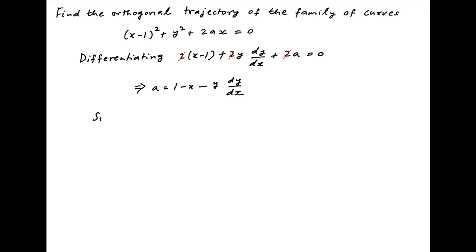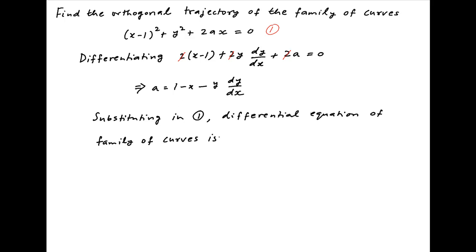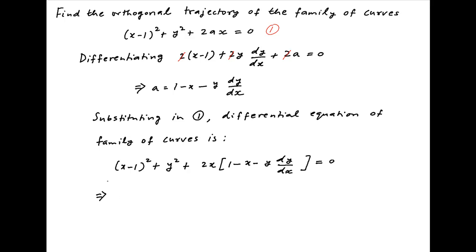Substituting the value of a in the given equation of the family of curves, we get the differential equation: (x minus 1) whole square plus y square plus 2x times (1 minus x minus y times dy/dx) is equal to 0. This can be written as minus 2xy dy/dx plus x square minus 2x plus 1 plus y square plus 2x minus 2x square is equal to 0.